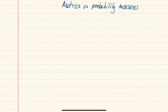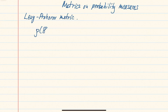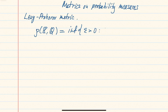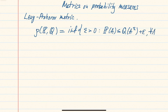We begin by defining two metrics on the set of probability measures. The first metric is the so-called Lévy-Prokhorov metric, defined by taking the infimum over all positive epsilon such that for all Borel sets A in our metric space S, the probability P(A) is less than or equal to Q of the epsilon-neighborhood of A, plus epsilon.